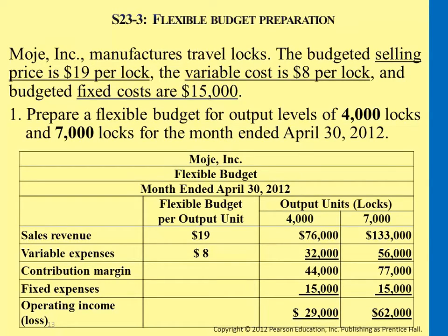For variable expenses, it's $8 times 4,000 units, and $8 times 7,000 units. Subtracting that from sales revenue gives you contribution margin, and then subtracting fixed expenses gives you operating income.